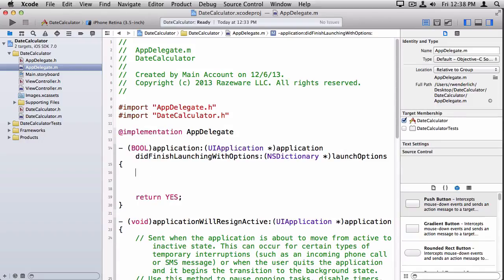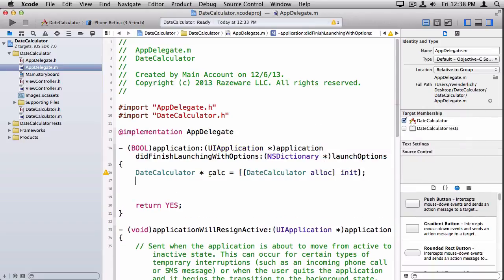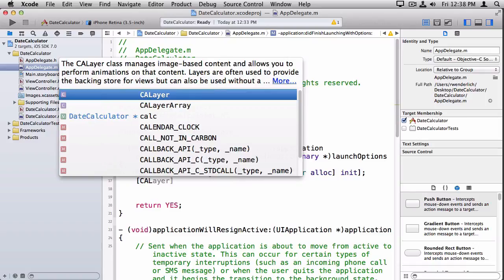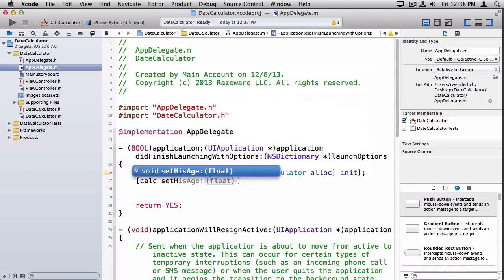We can say DateCalculator *calc, and to create a class, remember, [[DateCalculator alloc] init]. And then, let's set his age. So, we're going to use my age as an example. So, setHisAge to, I'm 34. So, I plug that in.